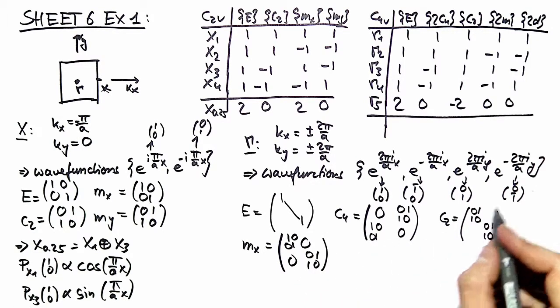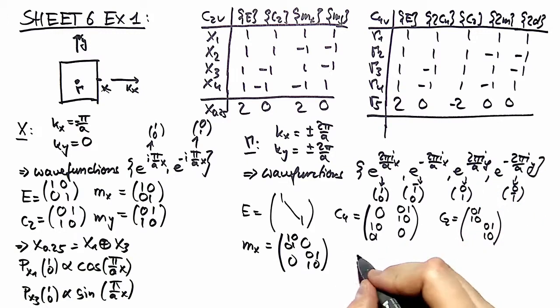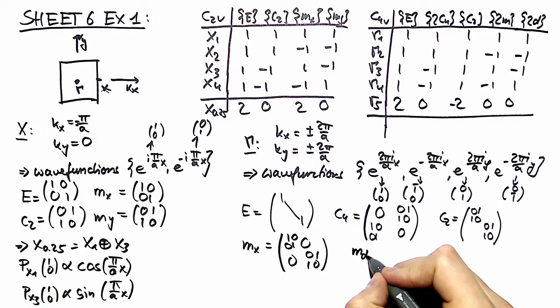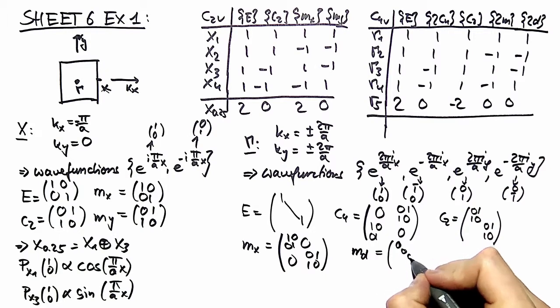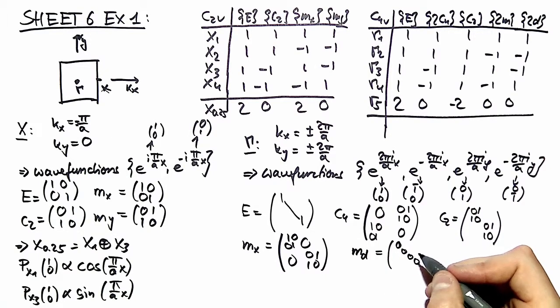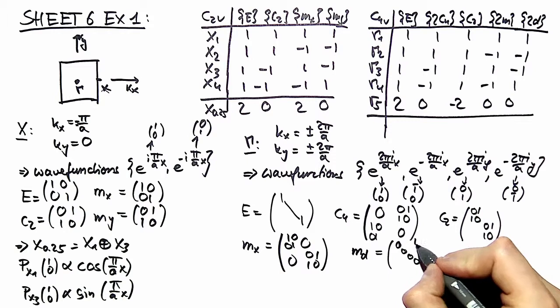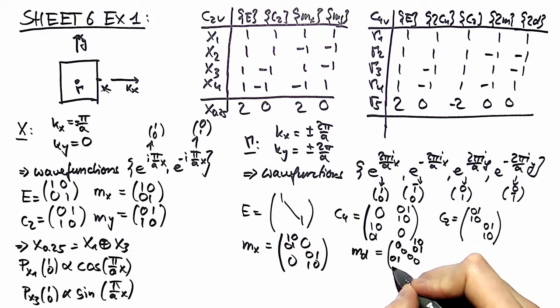Reflections at the x axis leave our bases with x in it invariant, and the bases with y switch partners among themselves. And the reflection planes along the diagonal gives us again zeros and a diagonal because we switch partners over here again.